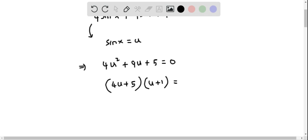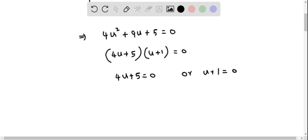And this means we can solve for u. That is either 4u + 5 equals 0, or u + 1 equals 0. Now replace u by sinx because we want to solve for x. So now I replace u by sinx.